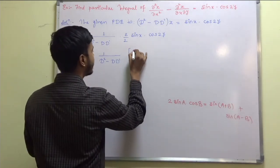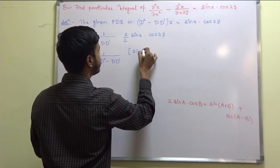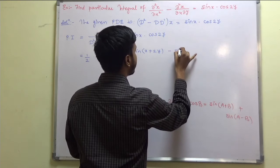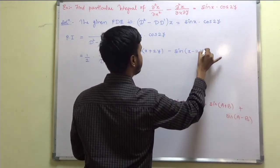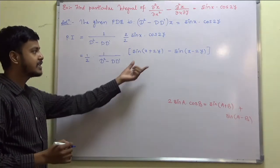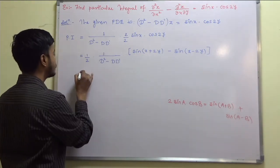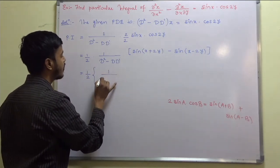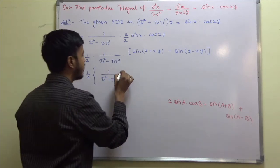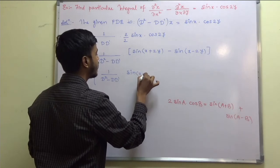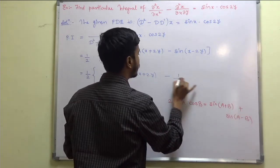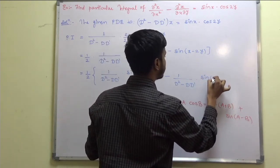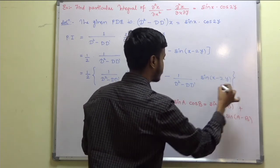This is 2 sine A cos B equal to sine A plus B plus sine of A minus B. So apply this formula over here and you can write sine of A plus B, so X plus 2Y minus sine of A minus B, that is X minus 2Y. Now this becomes very simple and you just need to separate this.